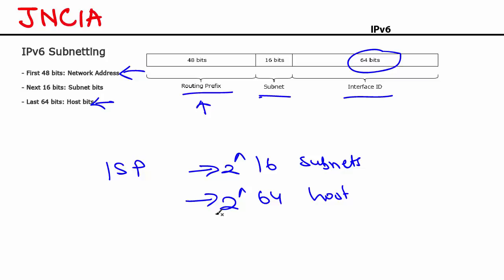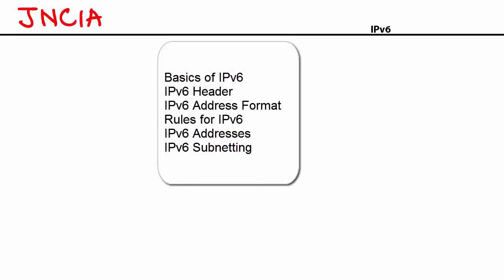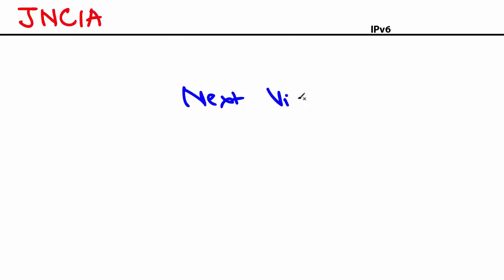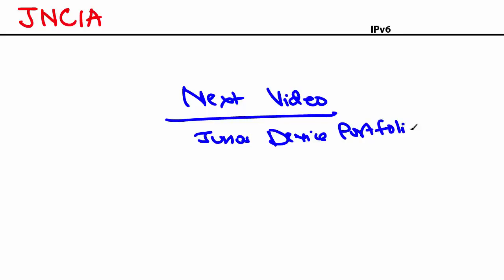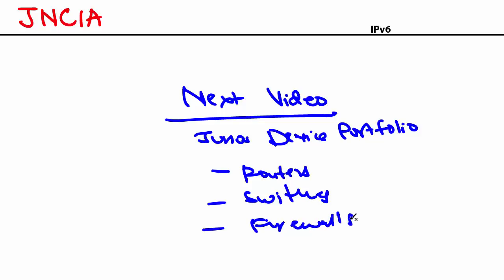That's all about IPv6 subnetting at the JNCIA level. To do a quick recap: in this video we looked at the basics of IPv6, the IPv6 header, the IPv6 address format and rules, the different IPv6 addresses, and IPv6 subnetting. In the next video we're going to look at the Junos device portfolio — the different routers, switches, and firewalls available with Juniper. I'm really excited to see you there. Thank you for watching.